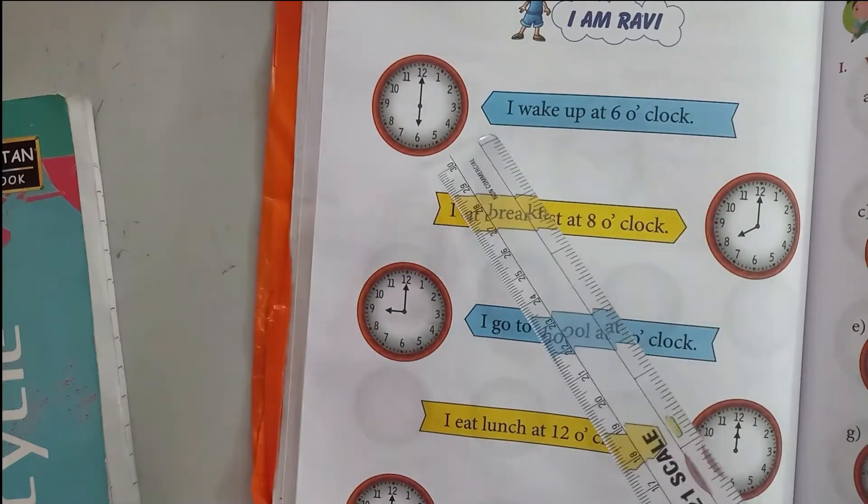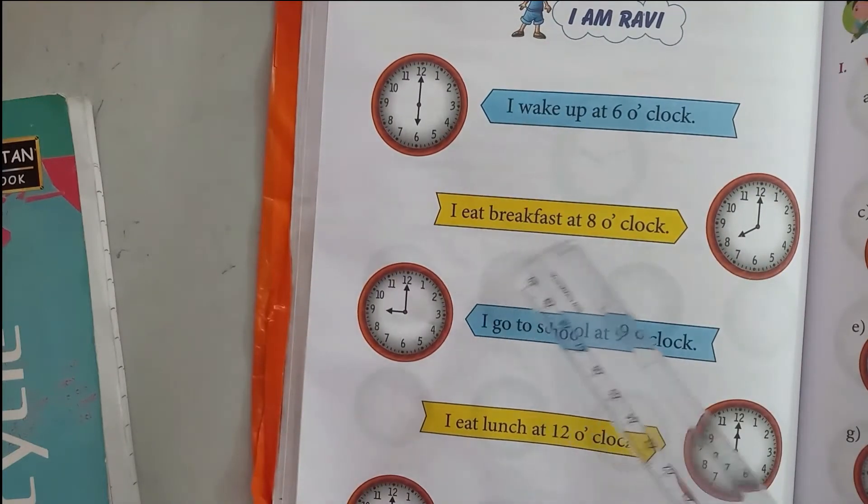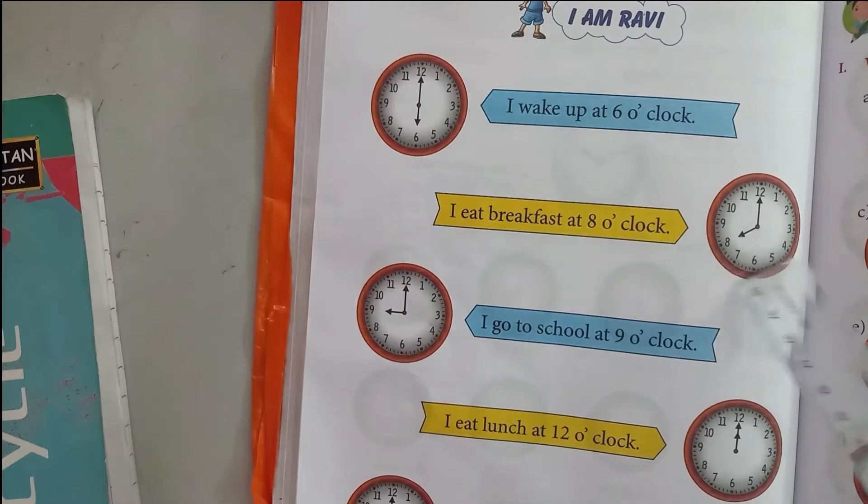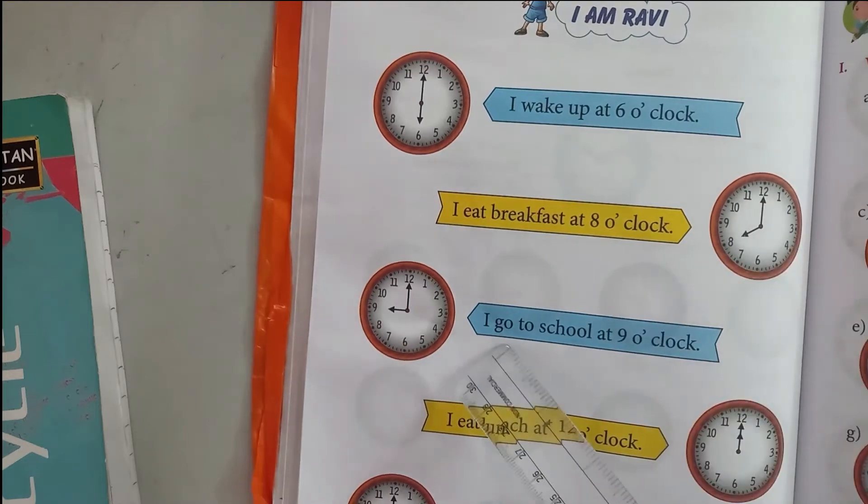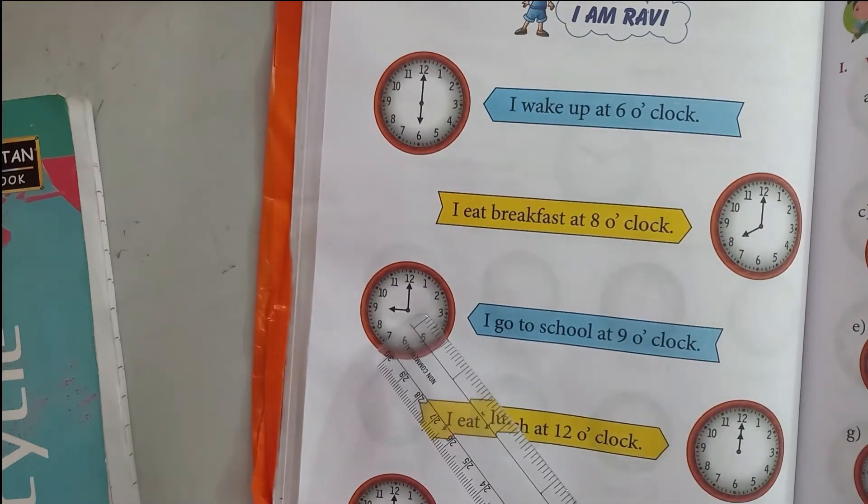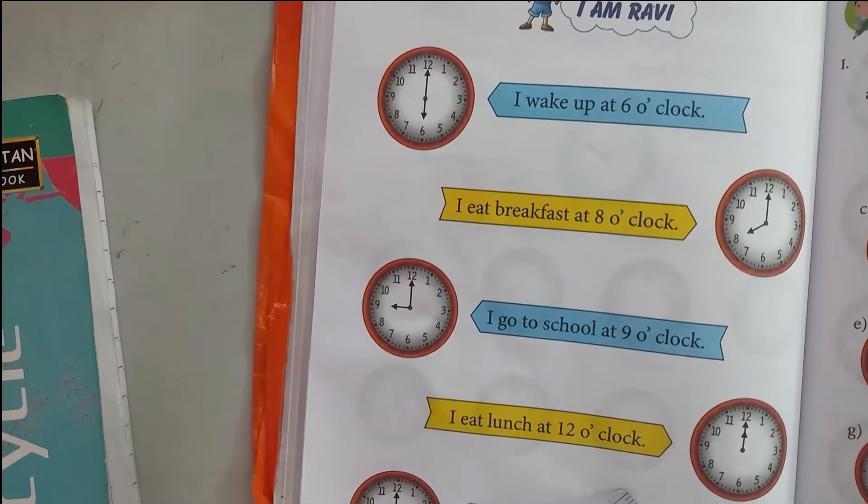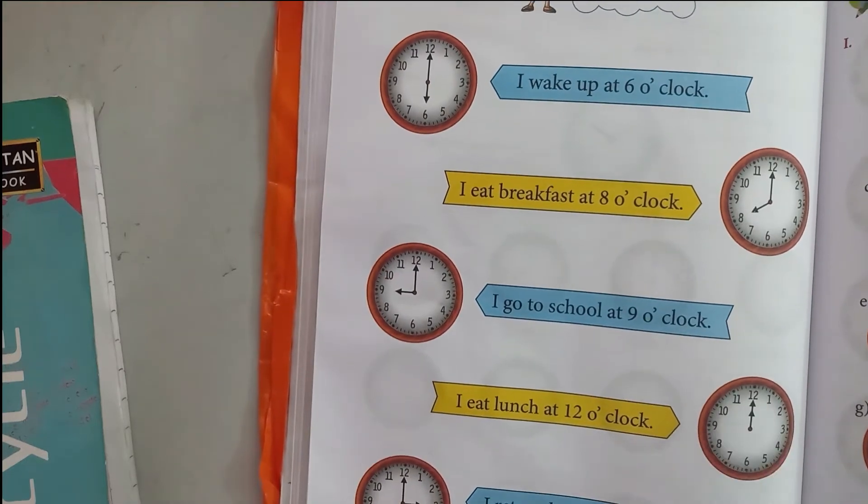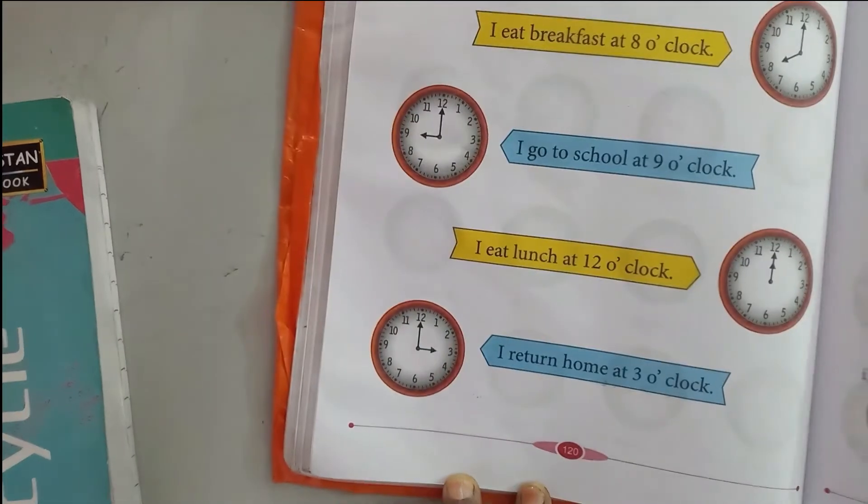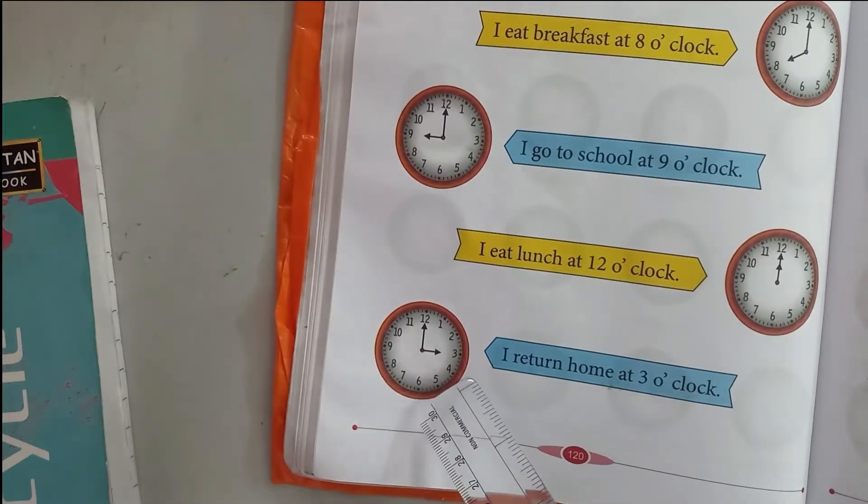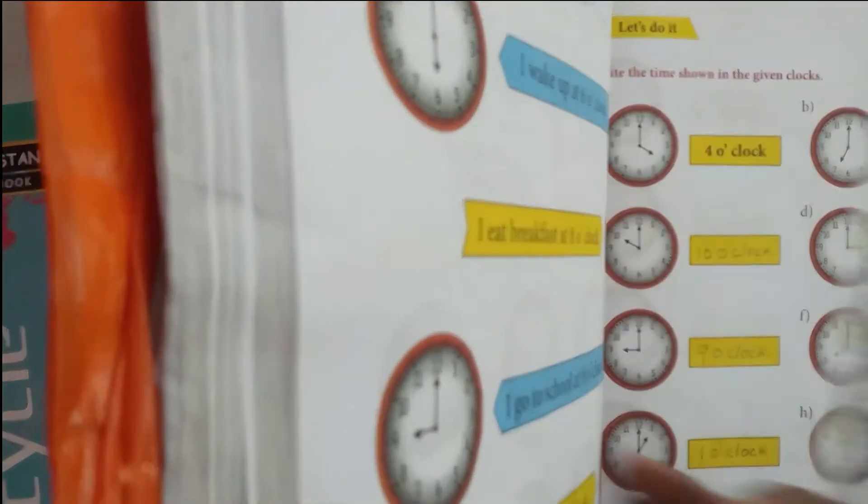Now I am Ravi. I wake up at 6 o'clock. I eat breakfast at 8 o'clock. I go to school at 9 o'clock. I eat lunch at 12 o'clock. I return home at 3 o'clock.